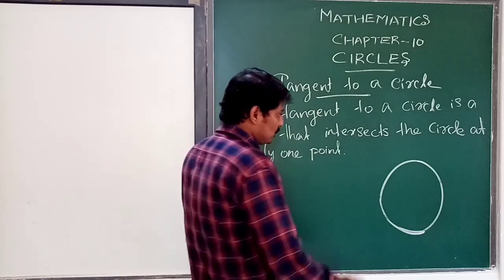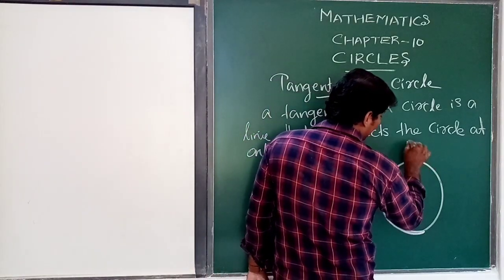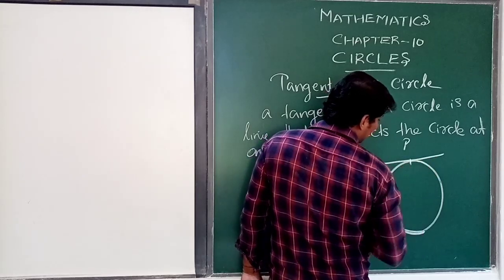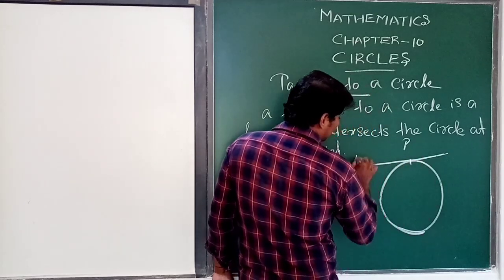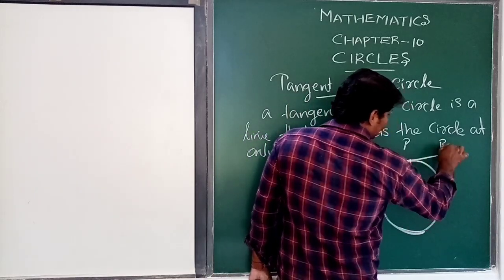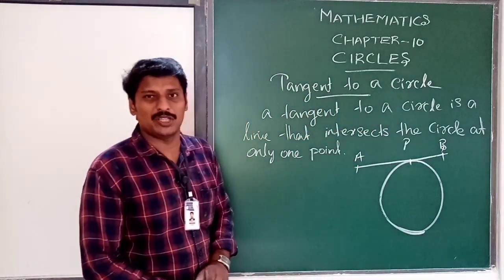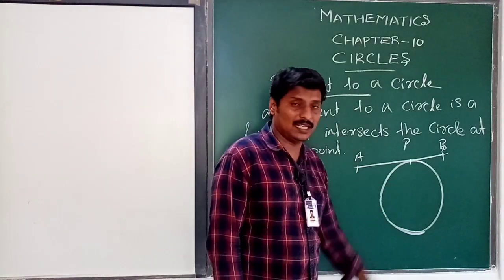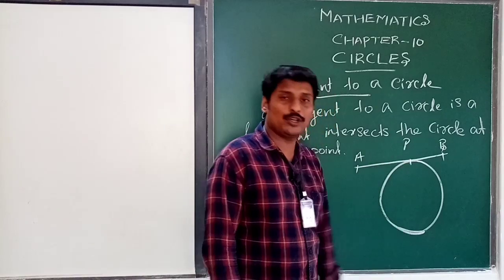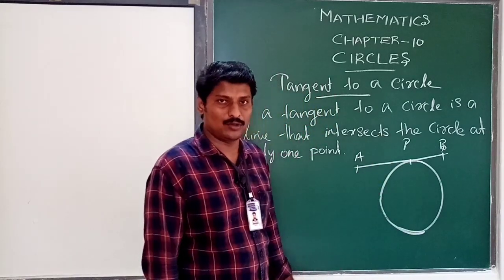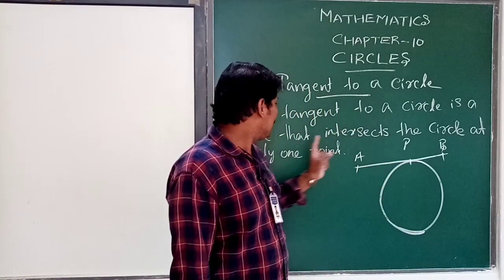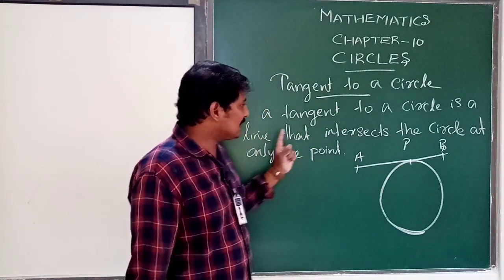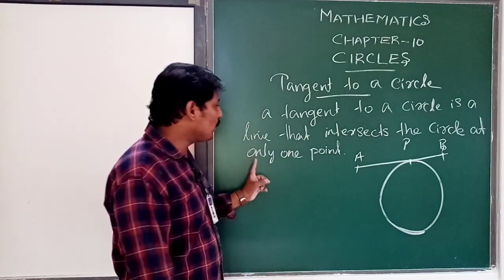Now I will mark here. One point will touch each other. A, B — line AB is a tangent. A tangent to a circle is a line that intersects the circle at only one point.